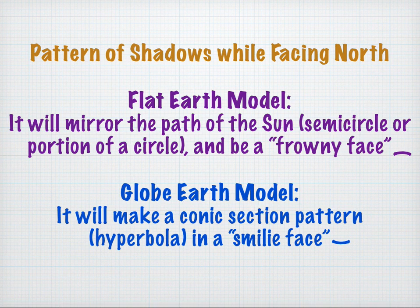Here are our final summary conclusions. If you're marking the pattern of shadows when you face north on the flat earth model, it'll mirror the path of the sun being a semicircular or a portion of a circle, and it'll be a frowny face curving downwards. On the globe earth model, it'll be a conic section pattern or a hyperbola, and it'll be a smiley face pattern curving upwards.